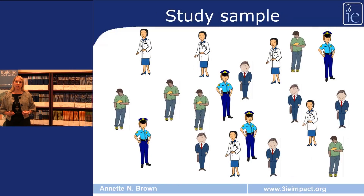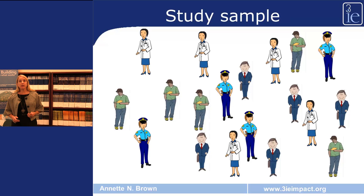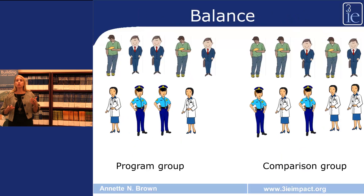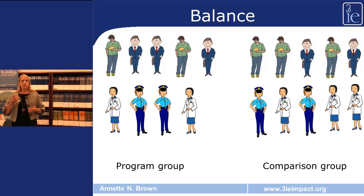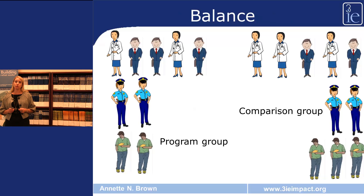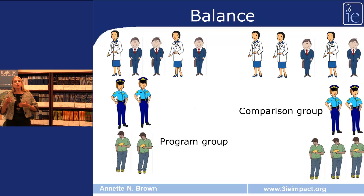Let's see how a randomized control trial gives us that balance. Suppose this is your study sample — a group of individuals who may or may not participate in the program. If we use random assignment, like a simple coin flip, to place people into the program or comparison group, the program group might have five men and four women while the comparison group has five men and five women — roughly balanced. Looking at education: the program group has five people with post-secondary education, two with secondary, and two students; the comparison group has five with post-secondary, two with secondary, and three students. This is what we think of as being balanced.